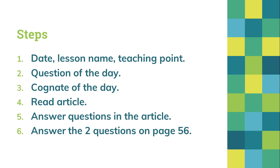So far, these are the steps to follow to complete today's lesson. First, have the date written at the top of the page, then the lesson name, and then our teaching point. Then write our question of the day and the cognate of the day. Then open the PDF file Engineer with Electrifying Outcomes and read the article — make sure you understand everything before moving on. Then answer the two questions found in the article. Finally, go back to page 56 in your book to answer the two questions there.